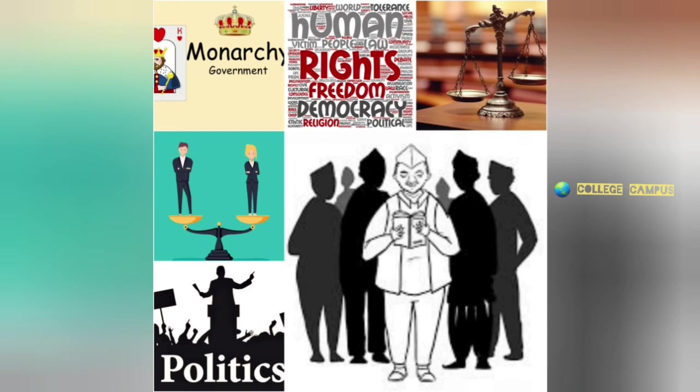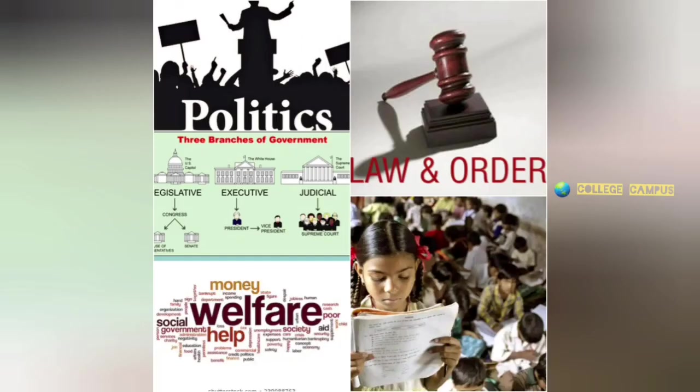Political science provides information about the origin and development of ideas such as monarchy, freedom, justice, law, equality, good government, wars, and peace. It provides information about the structure and functions of state and government. In the light of past and present activities of the government, political science helps to plan the future activities of the state and helps to establish a modern welfare state. It also provides knowledge of the constitution and laws of the state.